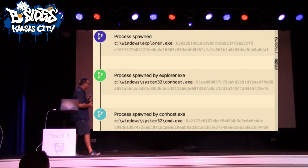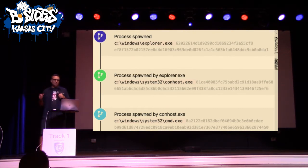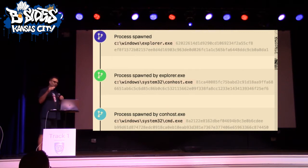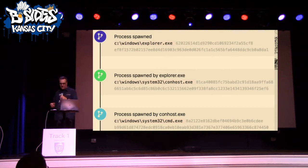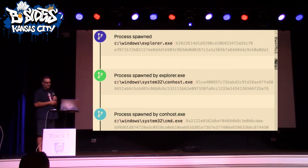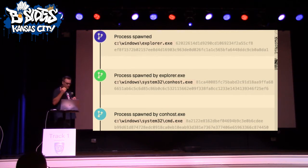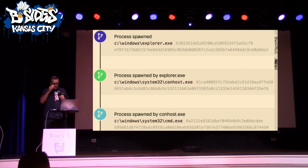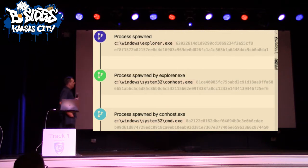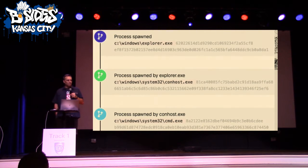The top line is a Windows Explorer process spawned, followed by a ConHost — child process of Windows Explorer. ConHost, if you don't know, is the Windows console host process. It typically fires when you run a command shell application or a PowerShell application — anything that runs at the Windows console or the command prompt. You'll see ConHost spin up as a child process. In this case, ConHost is spinning up as a child process of Explorer, and then ConHost is running command shell.